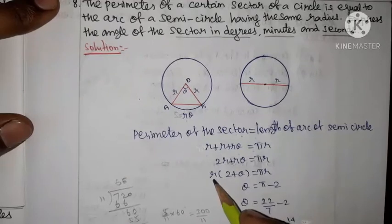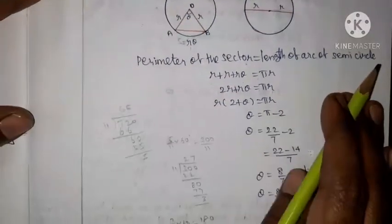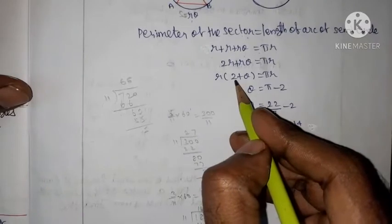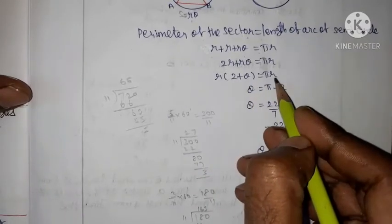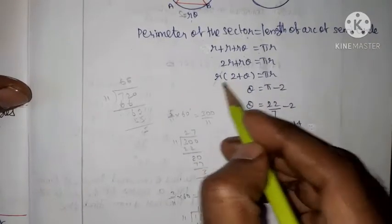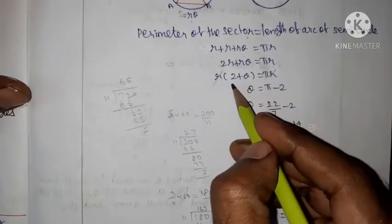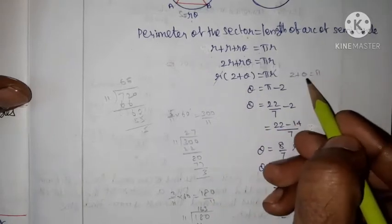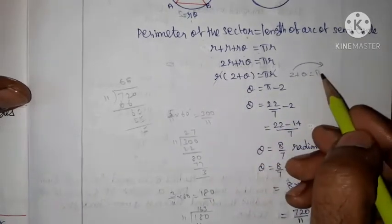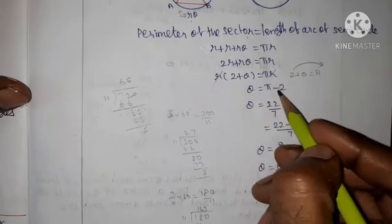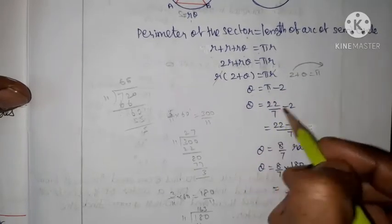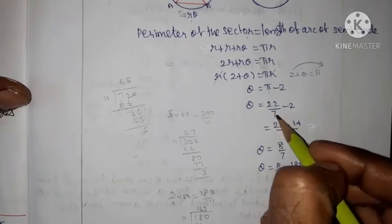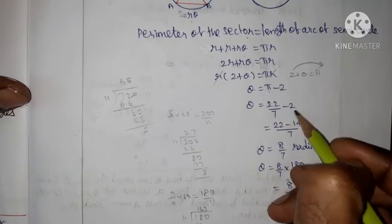So r(2 + theta) = pi·r. Here r cancels out, giving 2 + theta = pi. Therefore theta = pi minus 2. Taking pi equal to 22/7, theta equals 22/7 minus 2.